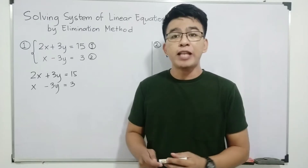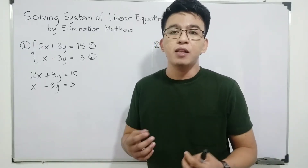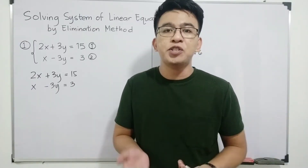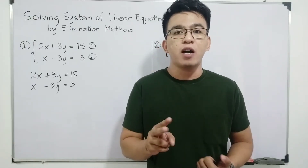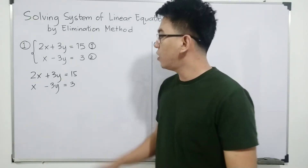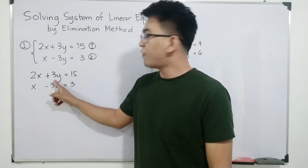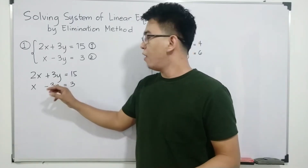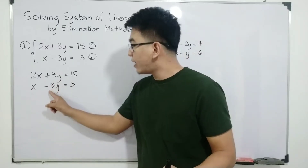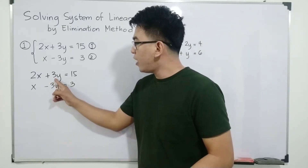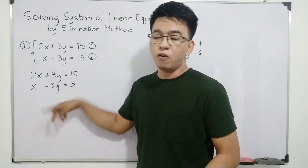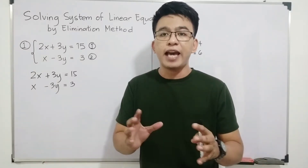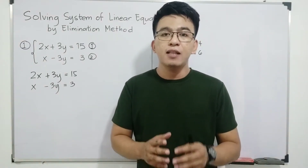How do we choose which variable to eliminate? The coefficients of those variables must be additive inverses. Look at the variable y: in the first equation we have positive 3y, while in the other equation we have negative 3y. Positive 3 is the additive inverse of negative 3, so we can easily eliminate the variable y.